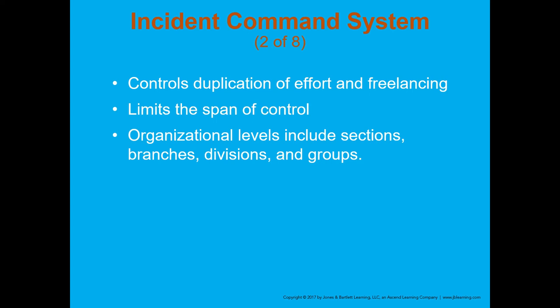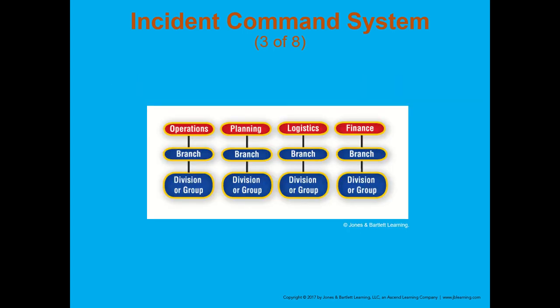The command system limits the span of control. Span of control means if you put someone in charge of 10 different people, they're not going to be able to control or understand what all 10 are doing. The number they usually look for is five to six — you can be responsible for five to six other people. That's what span of control means. Organizational levels include sections, branches, divisions, and groups.